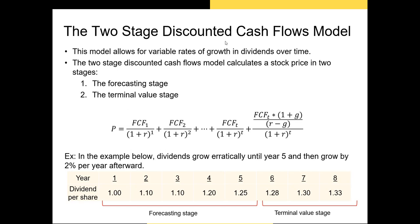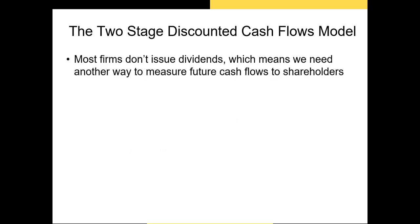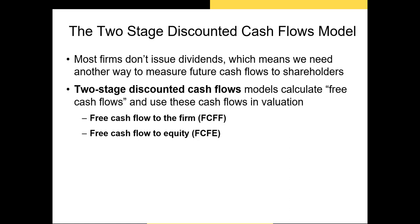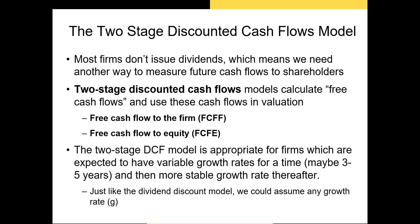Before using this model, note some key points. First, most firms don't pay dividends, so we use free cash flows rather than dividends. There are two free cash flow models: FCFF and FCFE. The FCFF model requires the weighted average cost of capital as the discount rate since those cash flows can be paid to either stockholders or bondholders. The two-stage DCF model is most appropriate for firms expected to have variable growth rates in the near future but constant growth rates later.